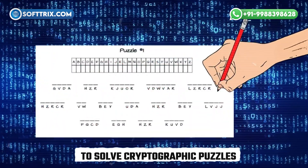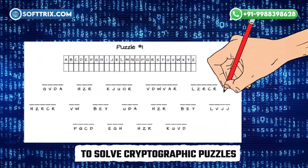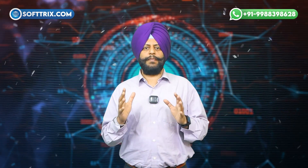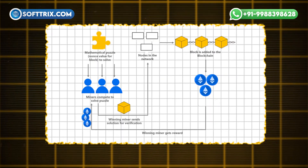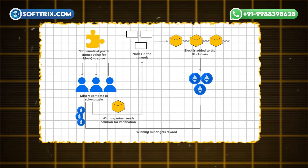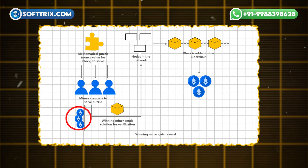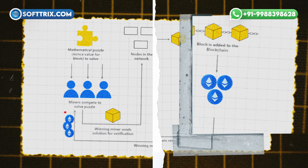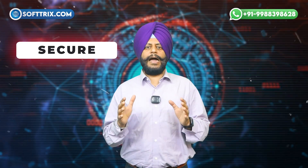In PoW, miners compete to solve cryptographic puzzles. The first miner to solve the puzzle gets to add a new block to the blockchain and earns Ether as a reward. This competition ensures the network remains secure and decentralized, as no single entity controls the entire chain.